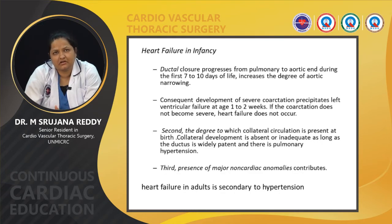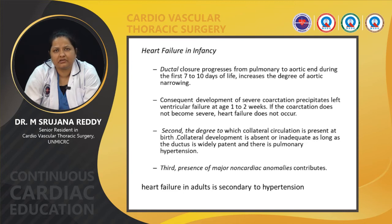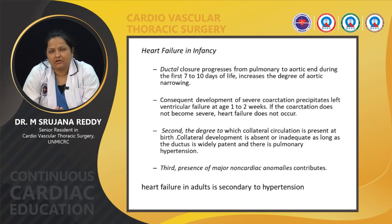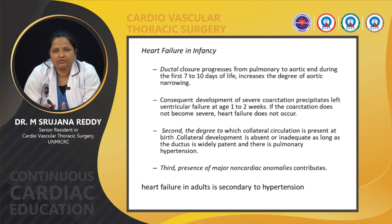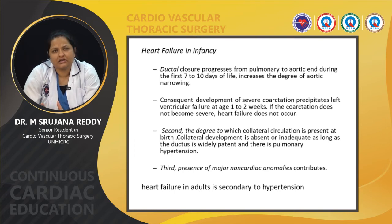Heart failure in infancy occurs because ductal closure progresses from the pulmonary to the aortic end during the first 7 to 10 days of life, increasing the degree of aortic narrowing and precipitating left ventricular failure between 1 to 2 weeks of age. Second, collateral development is absent or inadequate as long as the ductus is widely patent and pulmonary hypertension is present. Third, the presence of major cardiac anomalies contributes to heart failure in infancy. Heart failure in adults is usually secondary to hypertension.